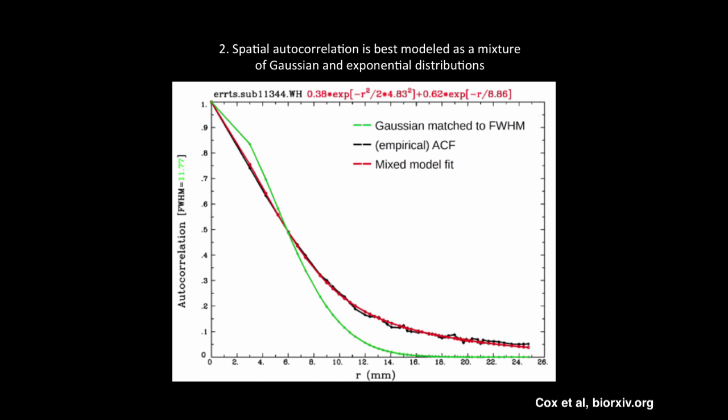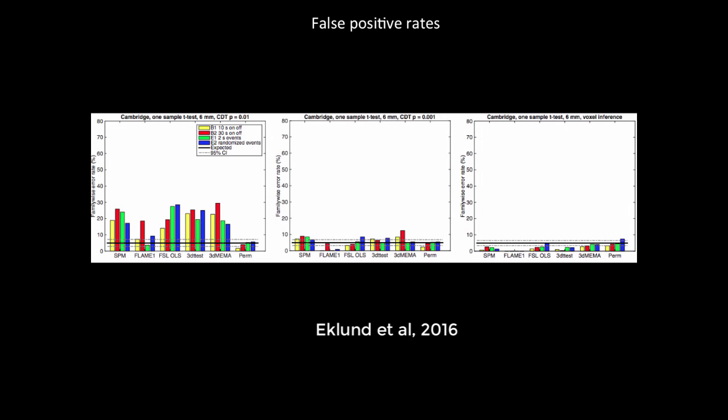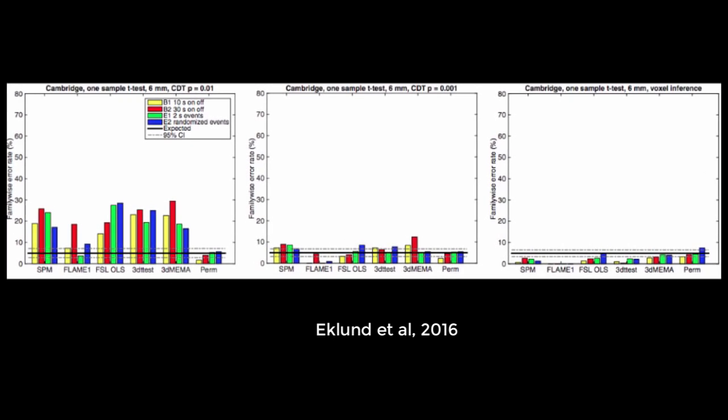Updated versions of 3dClustSim can now account for this mixed model shape. These flawed assumptions led to the false positive rates reported in the Eklund paper. Across all the different software packages — SPM, FSL, and AFNI — and across all kinds of different experimental contexts, you find inflated false positive rates relative to the expected false positive rate of 5%, reflected by the black line. Notably, across all scenarios, permutation testing, which does not rely on parametric assumptions of the normality of the distribution, did equally well.